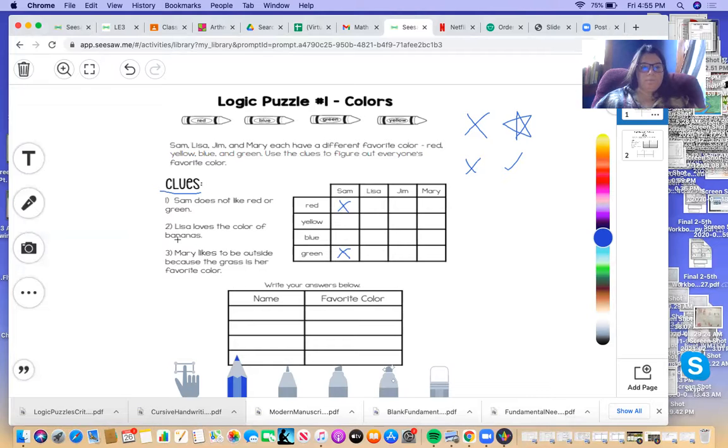And we'll go to clue two. Lisa loves the color of bananas. The color of bananas are yellow. So we find Lisa's name, we find yellow, and I'm going to put a star because we know that Lisa's favorite color is yellow.